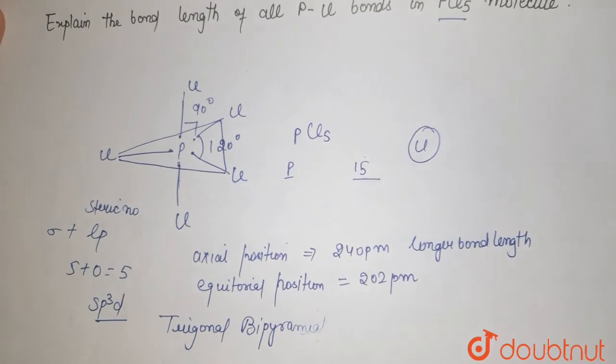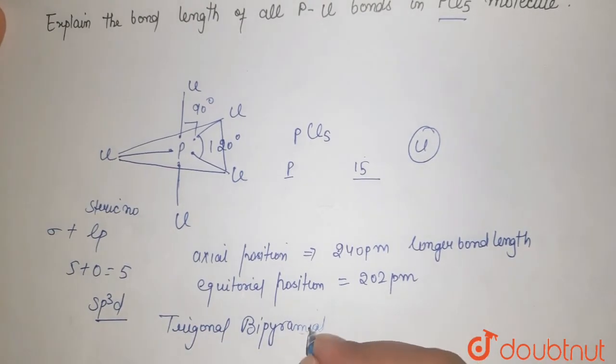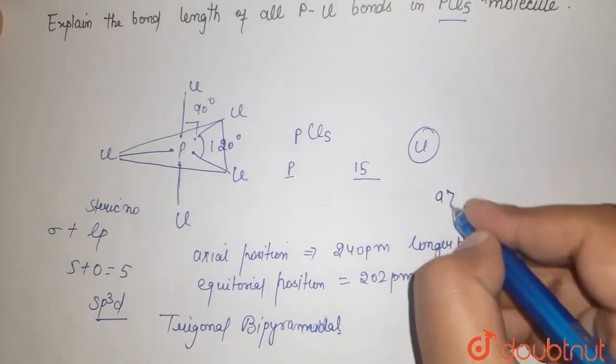This is the symmetry of your trigonal structure of PCl5. So this is how the bond length varies: your axial bonds are longer than your equatorial bonds.